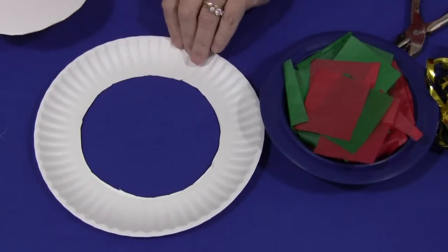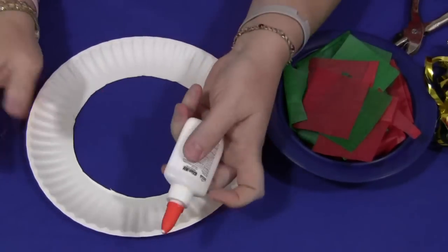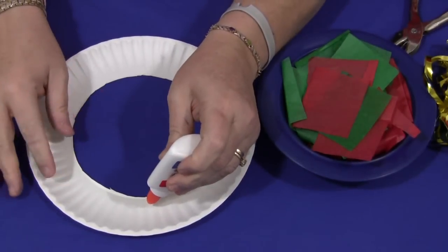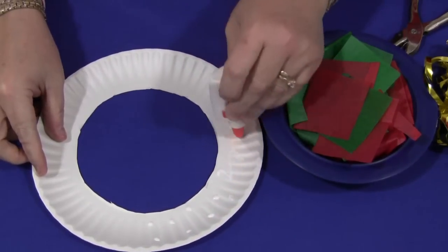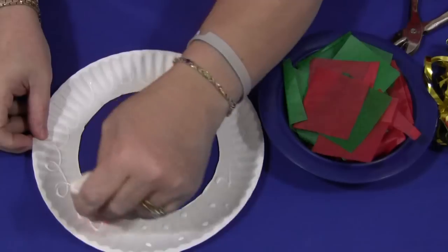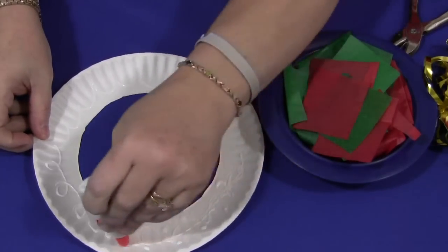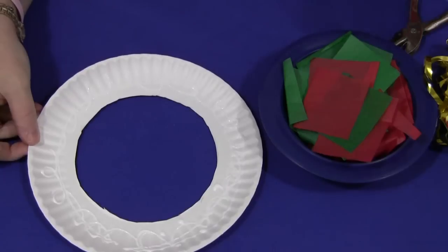So we have the paper plate with the center removed. The next step is to apply glue. You or the children can do this themselves. They can either do dots on the paper plate or squiggle lines or go all the way around, but make sure you have enough glue for the tissue paper to stick.